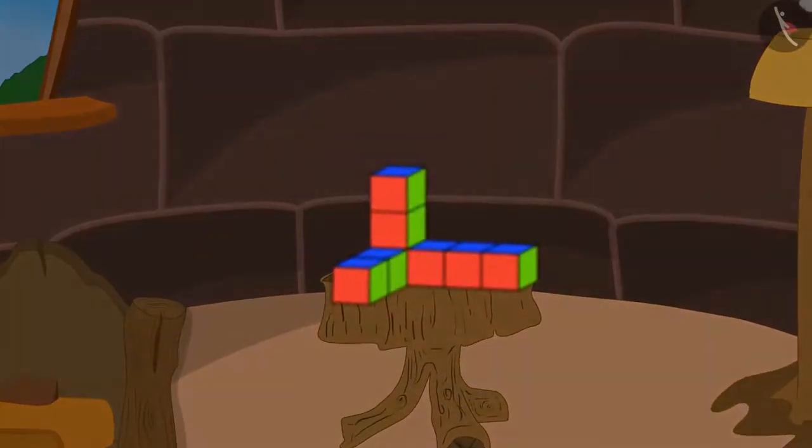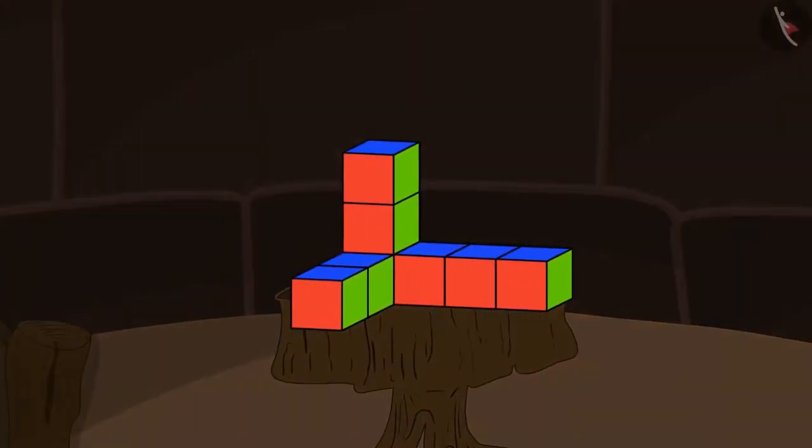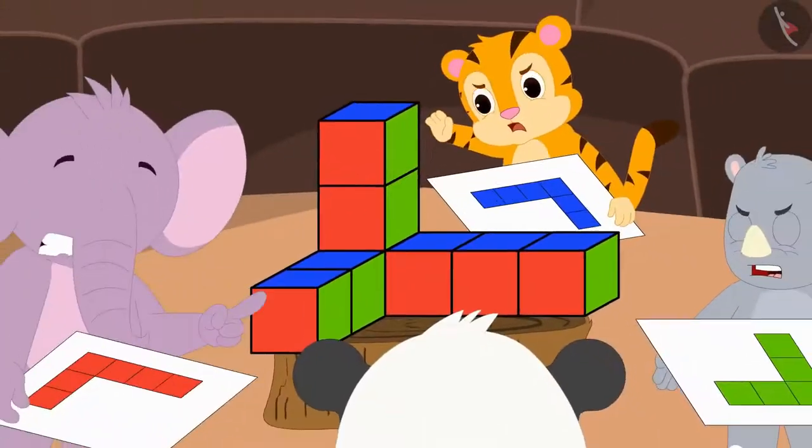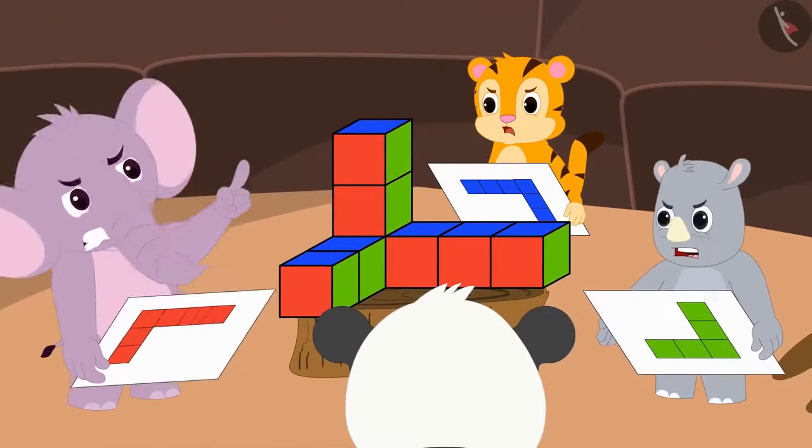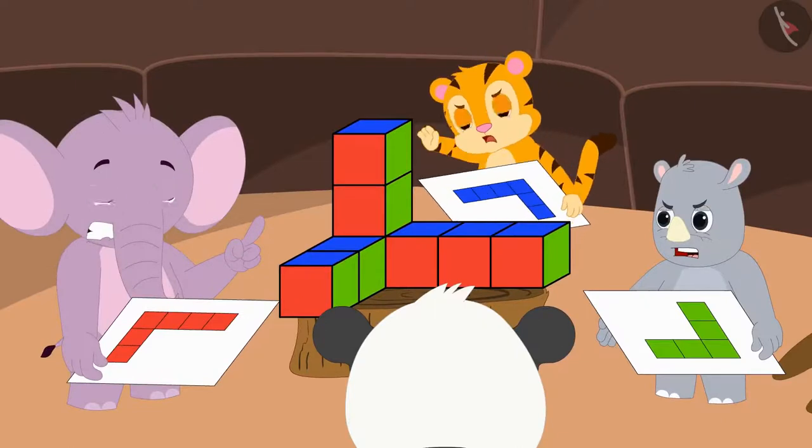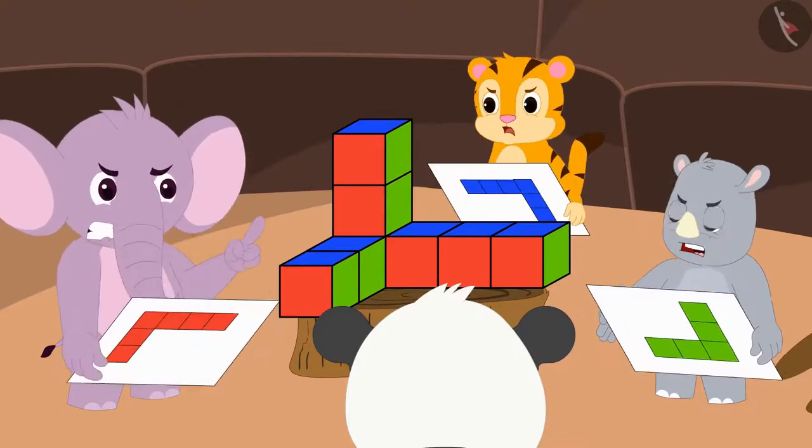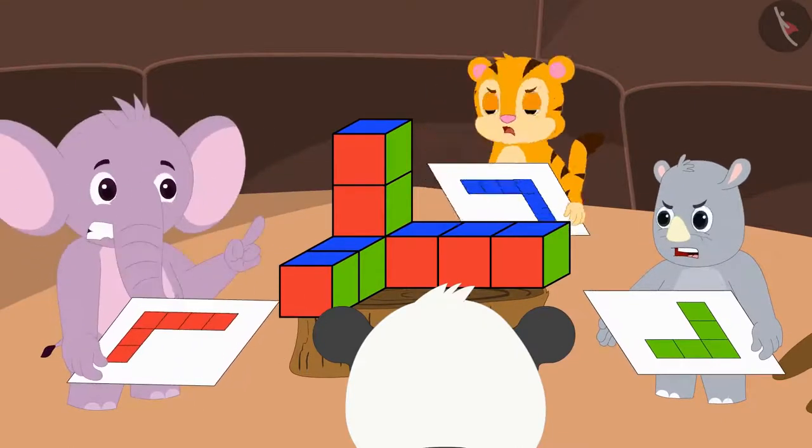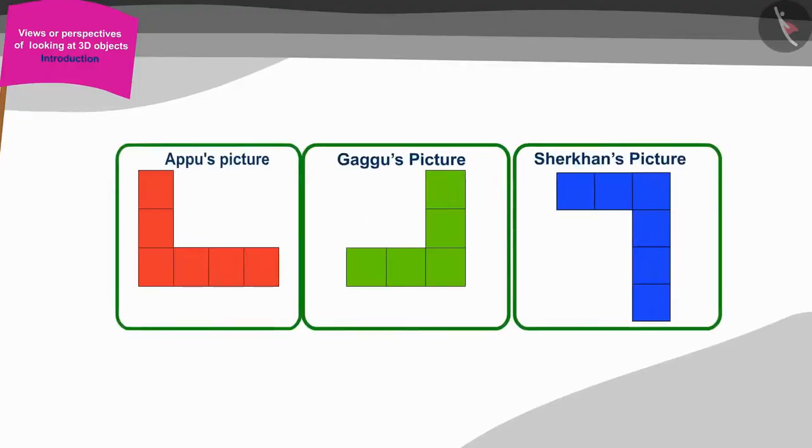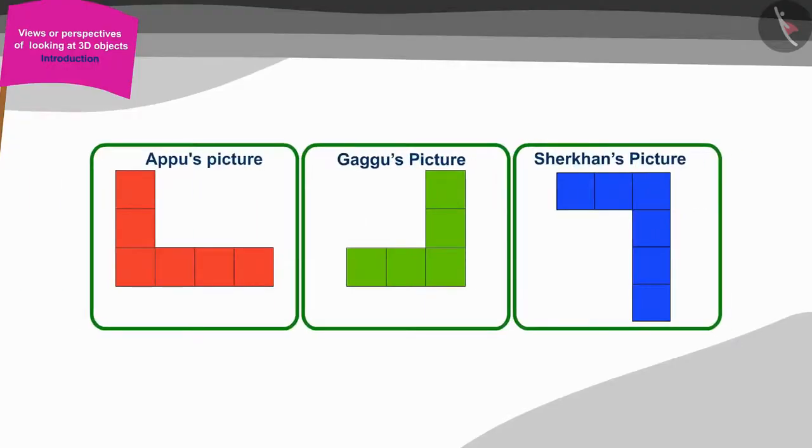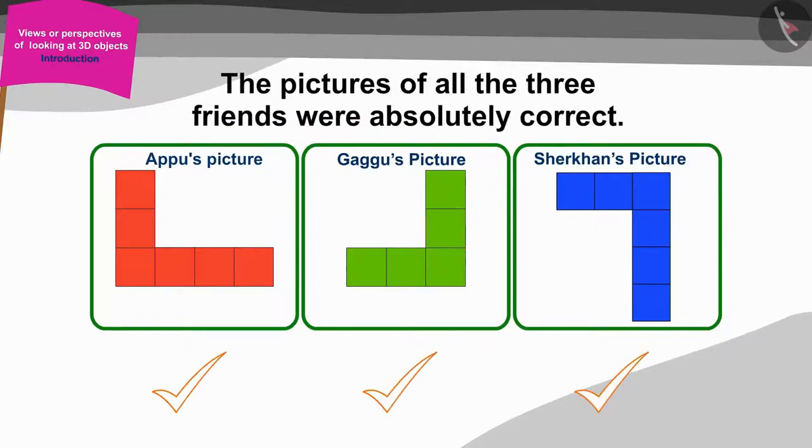Golu made such a shape out of the boxes. Now, the three friends started quarrelling about whose picture best matches the shape made by Golu. What do you think is the correct answer? Yes, the pictures of all the three friends are absolutely correct.